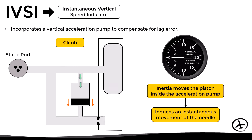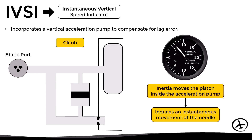The downward piston movement produces a suction, causing the pressure in the capsule to reduce rapidly. This has the effect of an instantaneous climb rate indication. Obviously this situation is temporary, since the springs inside the acceleration pump will return the piston to the neutral position, and then the instrument will work as a regular VSI.